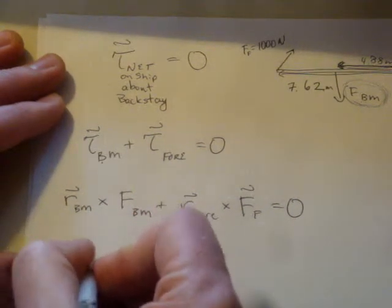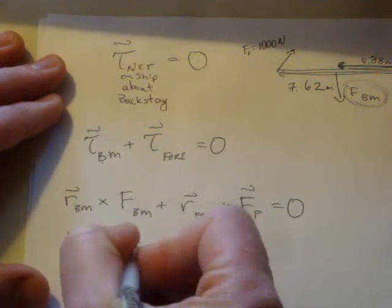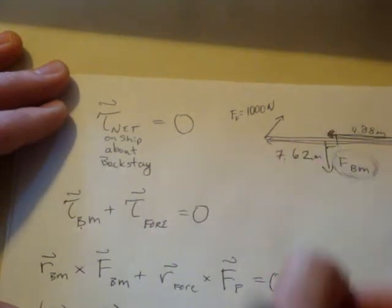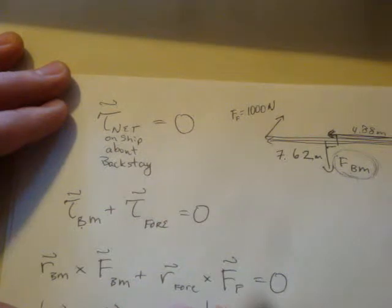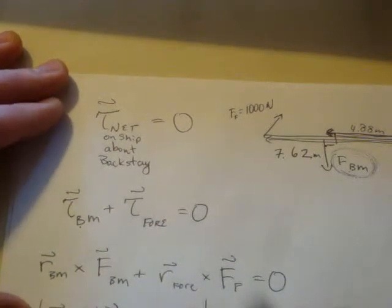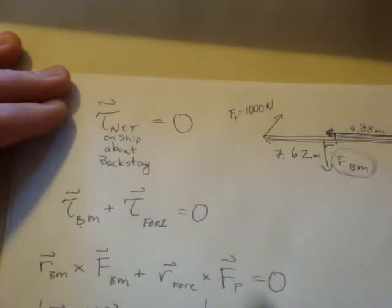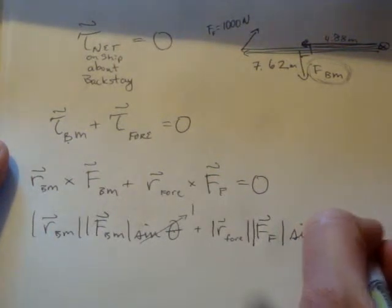We have R_BM times F_BM times sine of the angle between them. That angle is going to be 90 degrees, so sine is 1. Plus R of the forestay, which we know, times force of the forestay times sine of the angle between those, which we called theta_1 in the previous problem. That's going to equal zero.